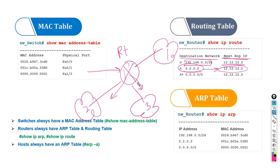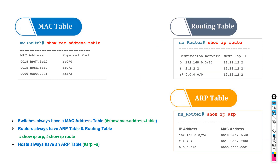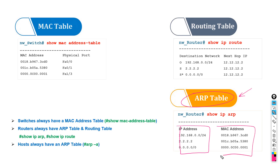Every router has a routing table; every switch has a switching table or MAC table. The third special type of table is called the address resolution protocol table — ARP table. Hosts, computers, and end devices always have an ARP table. Routers also have an ARP table. The ARP table tells us the correlation between an IP address and a MAC address.